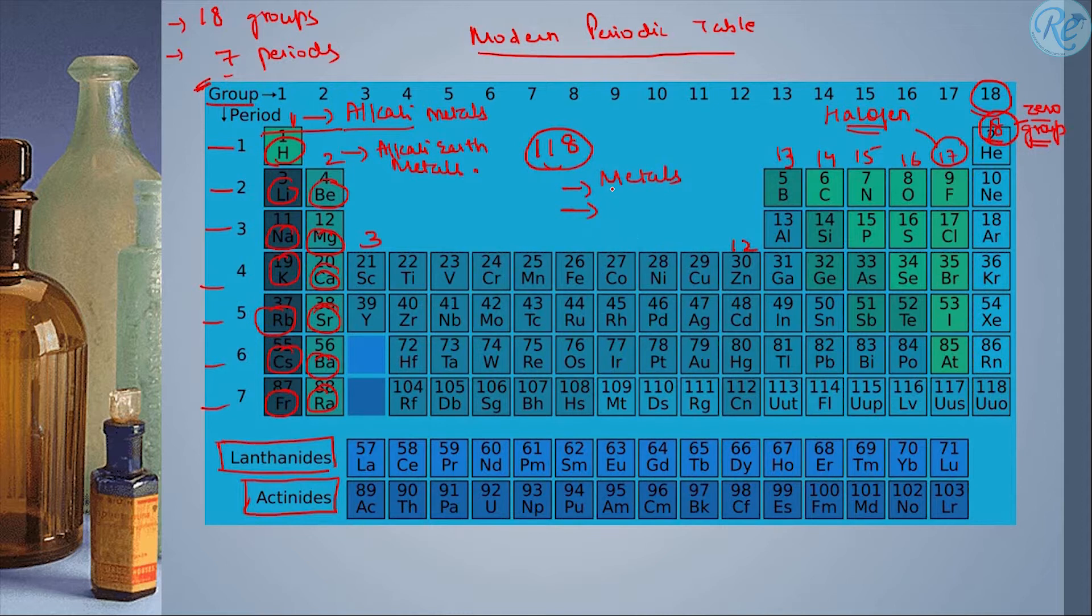Now, another very interesting thing is that all these elements are either metals, nonmetals, or metalloids. Metalloids are those which have properties of both metals and nonmetals, but you don't need to worry about them.